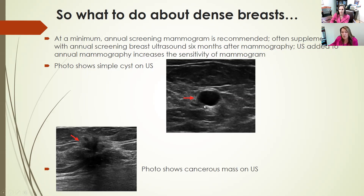This photo shows a simple cyst on ultrasound — round, completely black on the inside, a great example of a simple cyst. But this photo shows a cancerous mass on ultrasound, which looks much different. This is something that may not be picked up in an extremely dense breast on mammogram.